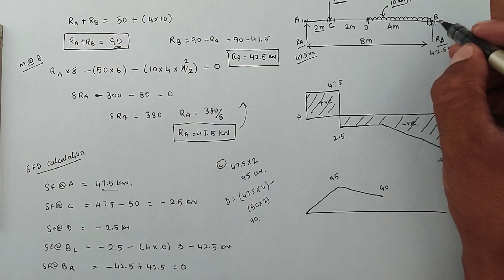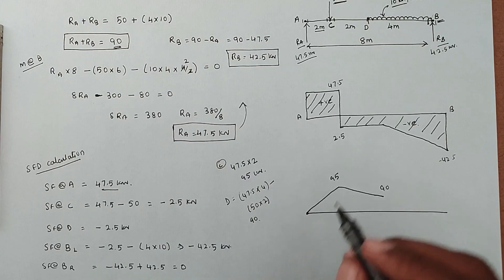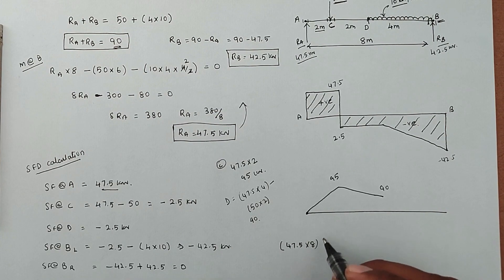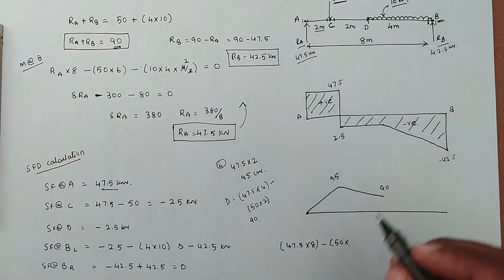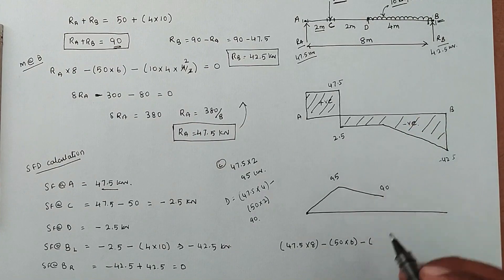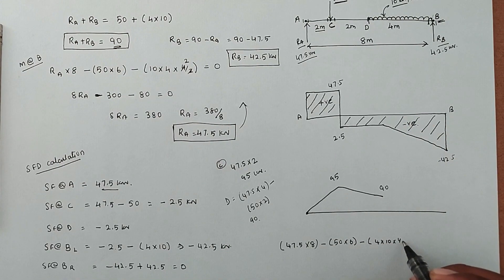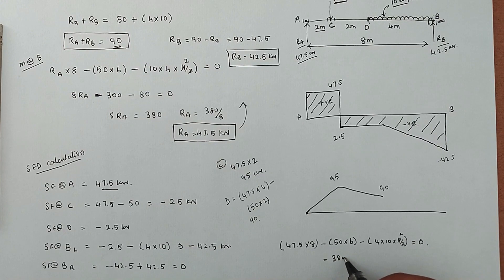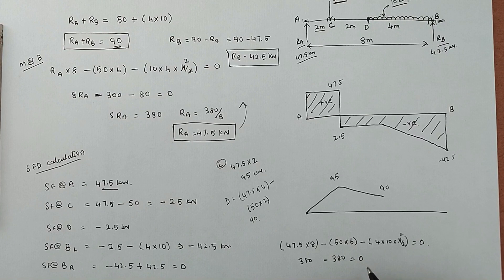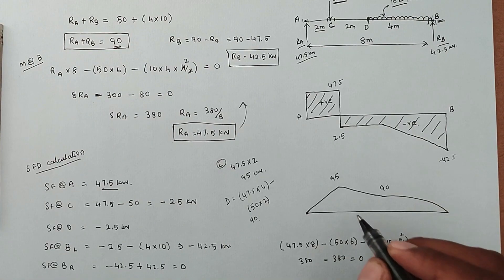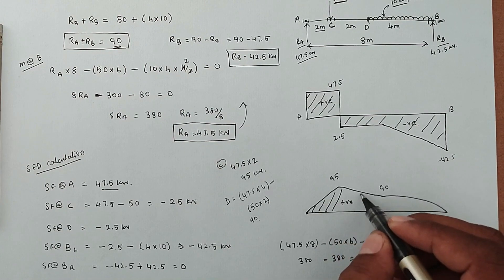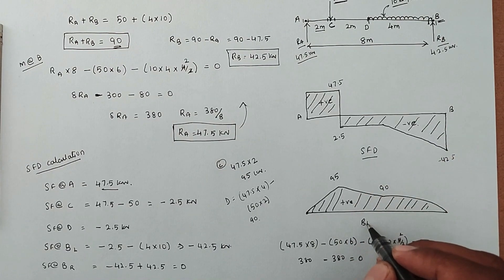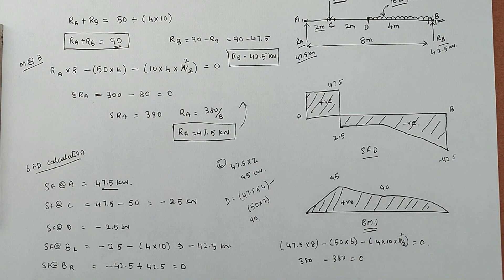Bending moment at B: RA into 8 minus 50 into 6 minus 4 into 10 into 4/2 equals 380 minus 300 minus 80 equals zero. So bending moment at B is zero, as expected for a simply supported end. All bending moments are positive. This completes the shear force diagram and bending moment diagram. We will see more problems in the next video. Thank you.